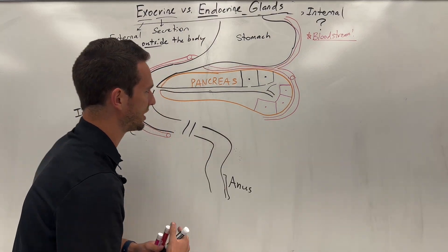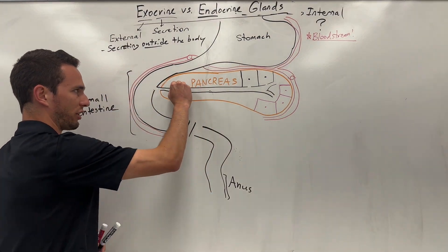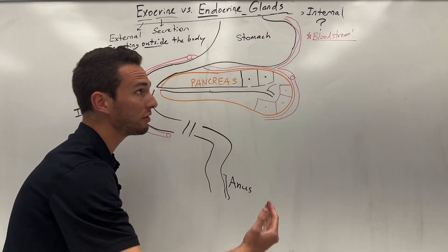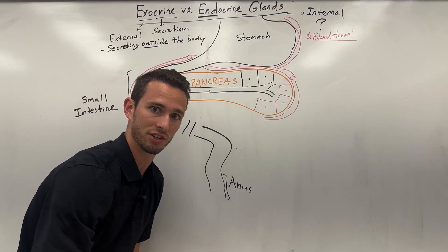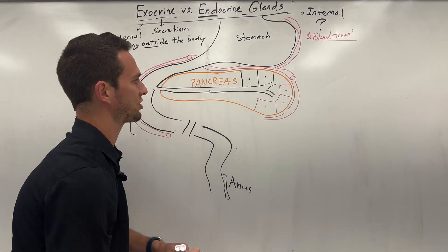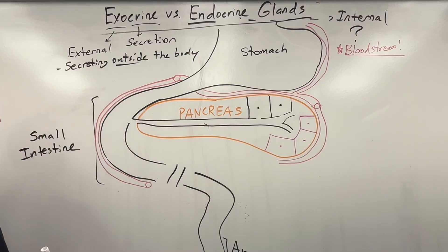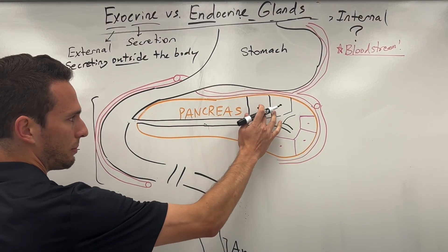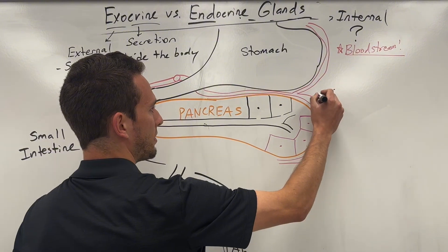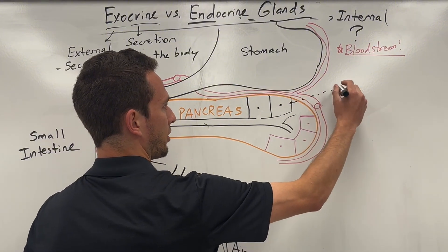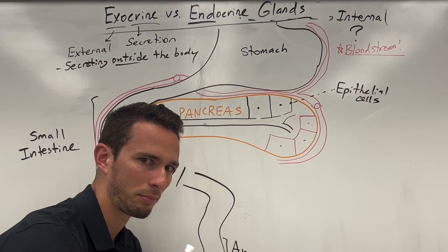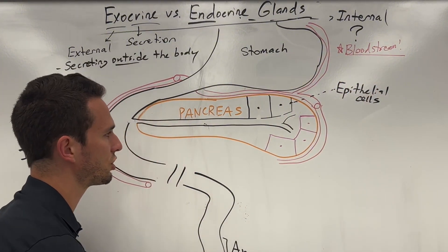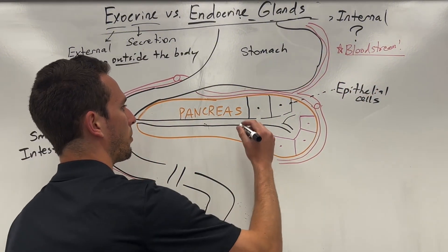I'm gonna take a quick case study here with the pancreas, which will have both exocrine and endocrine functions. Let's start with exocrine — remember, exo means out of the body. These little black cells here are going to be called epithelial cells of the pancreas, and they're gonna produce a product called sodium bicarbonate.